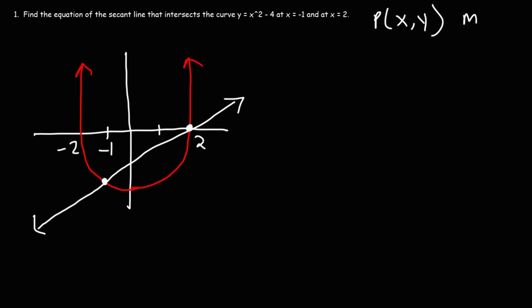In order to find the equation of any line, we need to get the slope. But before we can get the slope, we need to find the two points of interest on this line. So we know the coordinates for this point. We can clearly see that x is 2, y is 0.